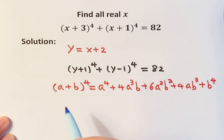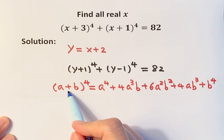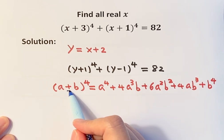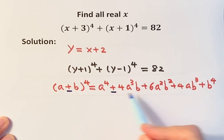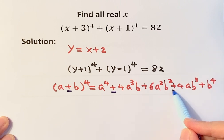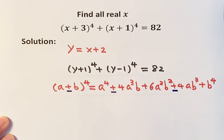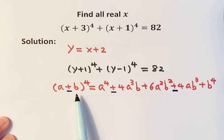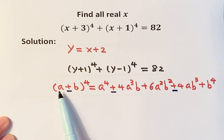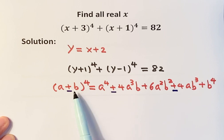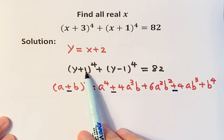If we have (a-b)⁴, then the signs alternate: the odd-powered b terms become negative, and everything else remains the same. I'm going to use these two formulas to expand the two terms, where a = y and b = 1.